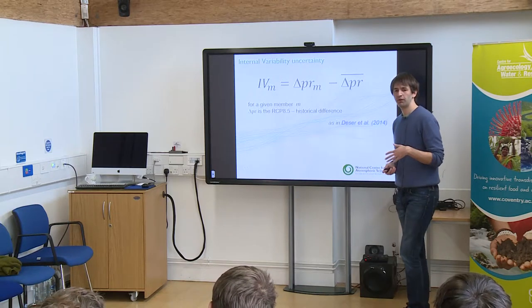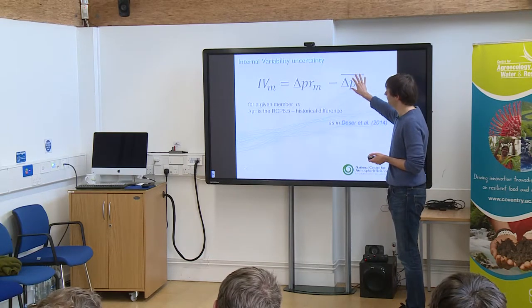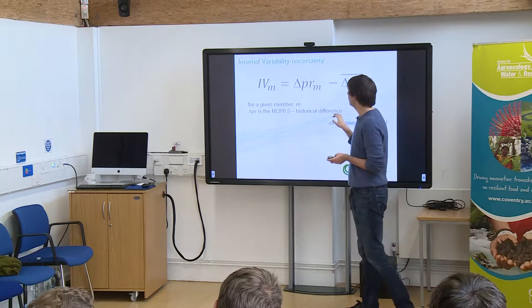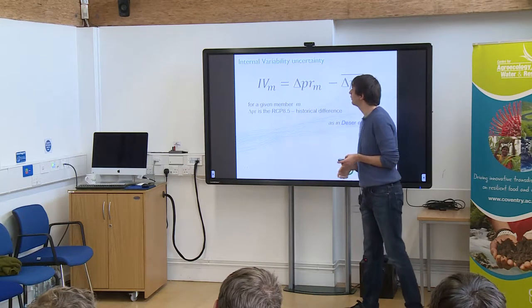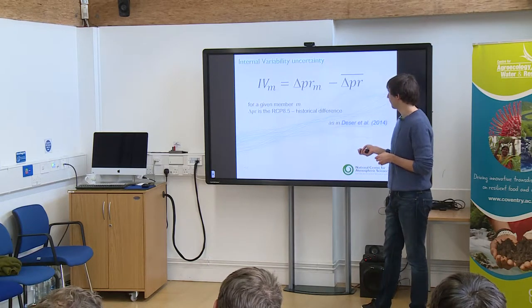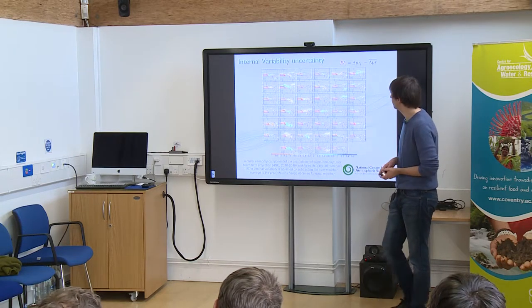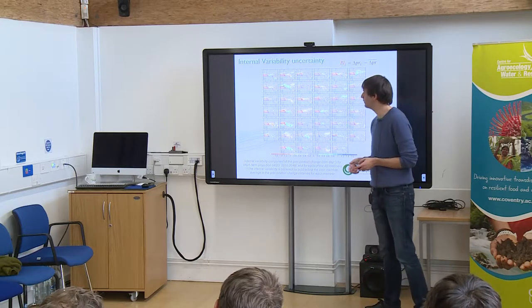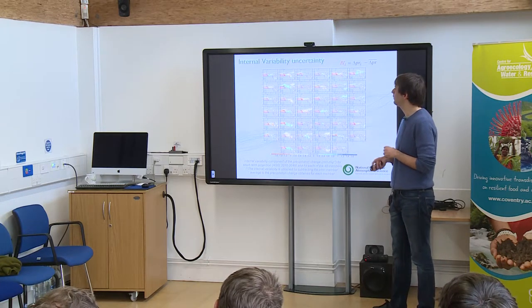With 40 members, we define the forced response as the average of the 40 members, and delta as the anomaly — the difference between the future and historical periods. If we take each of the 40 members and remove the forced response, we obtain what we call the internal variability component. Looking at all 40 members for short-term projections, sometimes there is an increase in precipitation, sometimes a decrease — there is a large spread due solely to internal climate variability. That's why using only one member could be problematic.